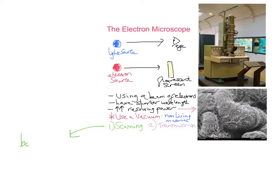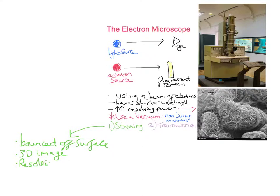For the scanning electron microscope, the electrons are bounced off the surface — that's one key thing to note. We get a 3D image. The resolving power is about 20 nanometres. And the specimen doesn't need to be thin.